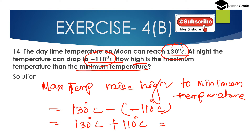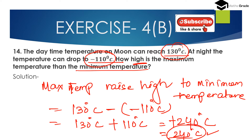Now when we add two integers with the same sign — here both are positive integers — we have to add these integers without sign first. Now 130 and 110 is 240 degrees Celsius. Both are of equal sign so we have to place the plus sign, that is 240 degrees Celsius. So the maximum temperature is 240 degrees Celsius more than the minimum temperature.